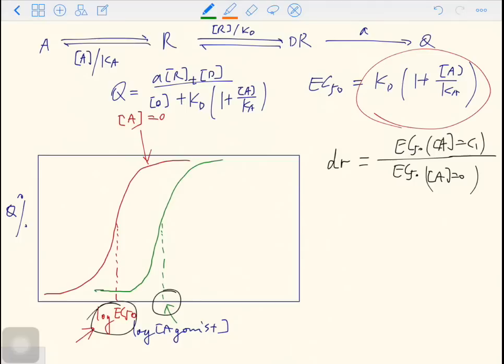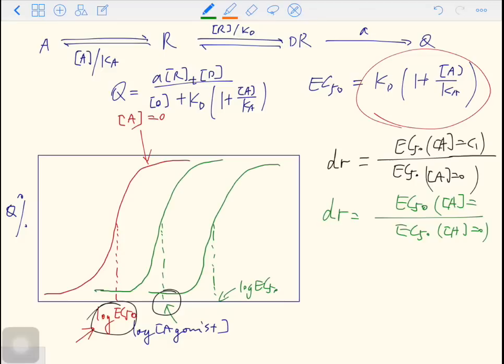If you keep increasing the concentration of the antagonist in the system, the curve will shift to the further right. You will have another new log EC50 and a new dose ratio. On the bottom of the fraction, it is still the EC50 in the absence of the antagonist. But on the top, it is the EC50 you just got when the concentration of the antagonist is C2.